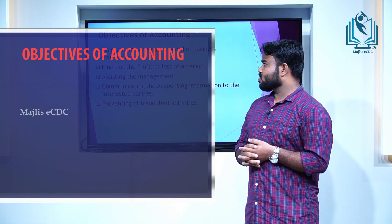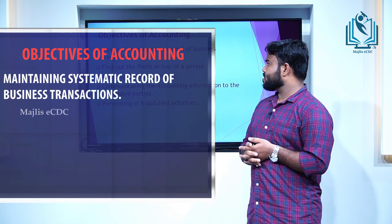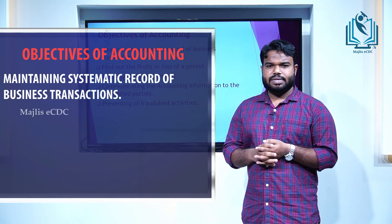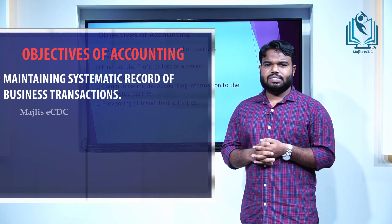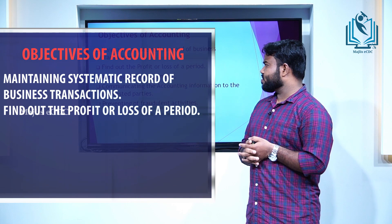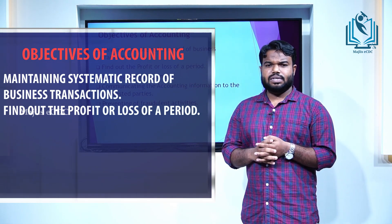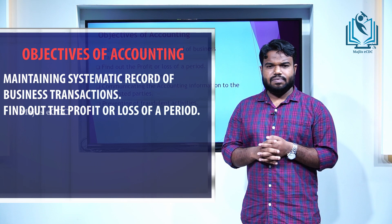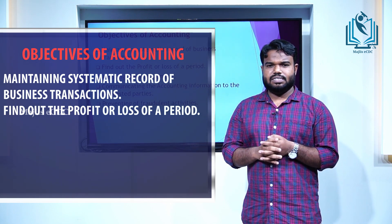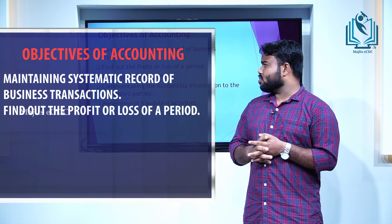Next, objectives of accounting. The first one is maintaining systematic record of business transactions. A systematic process of accounting can keep systematic records. The next one is to find out the profit or loss of a period. Each and every organization should know whether they have earned profit or loss in a particular period. Accounting can facilitate the calculation of profit or loss for a period.